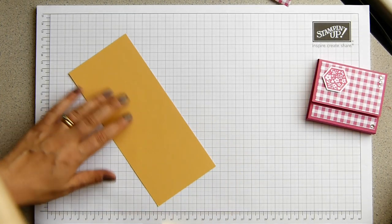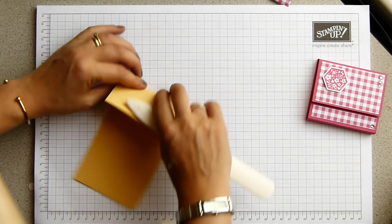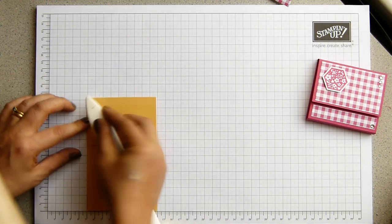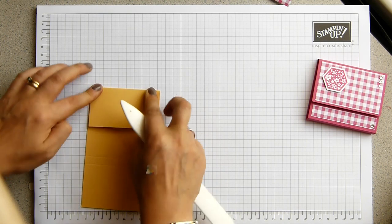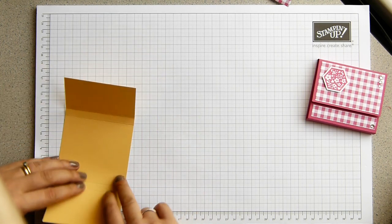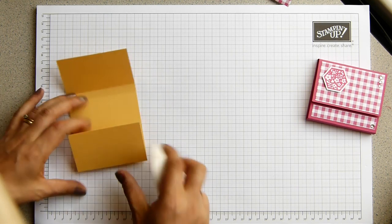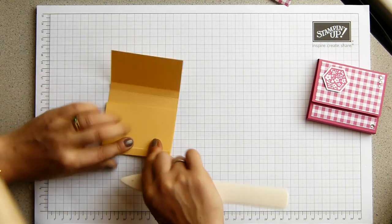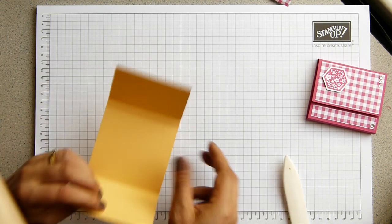And I'm gonna fold over on the creases, all these score lines, and just burnish them, because although I'm gonna be using a magnet, I don't want it to voluntarily pop open anyway. So just fold over, burnish those, and start decorating.